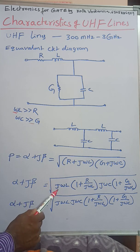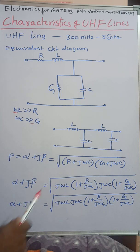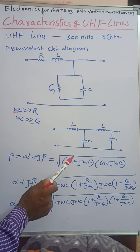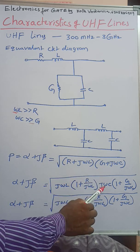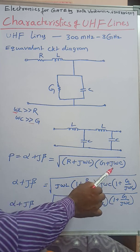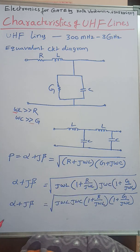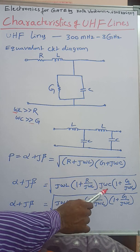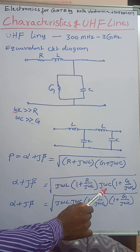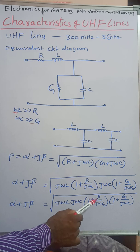In this equation, J·omega·L is taken as common, giving square root of J·omega·L divided by J·omega·L, which is 1, multiplied by (1 + R / J·omega·L). Similarly, J·omega·C is taken as common, giving (1 + G / J·omega·C).